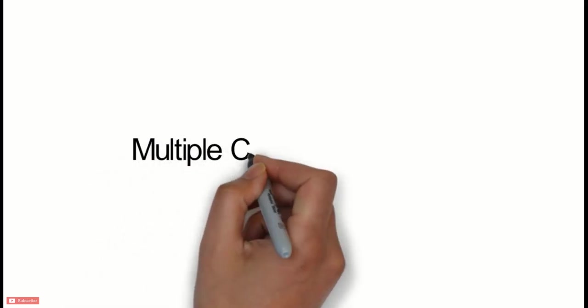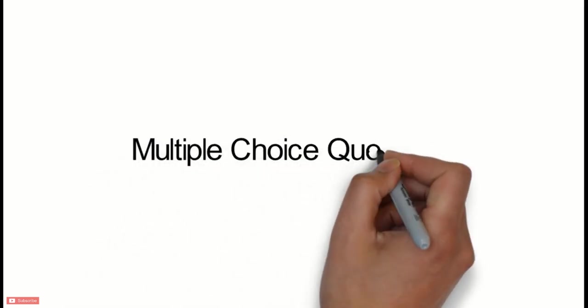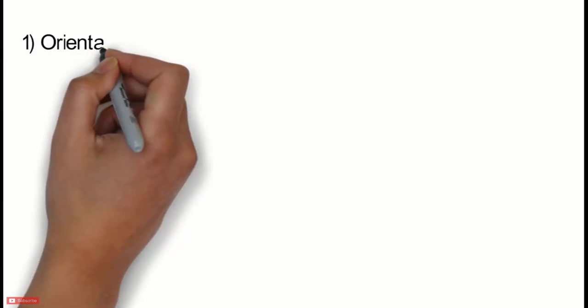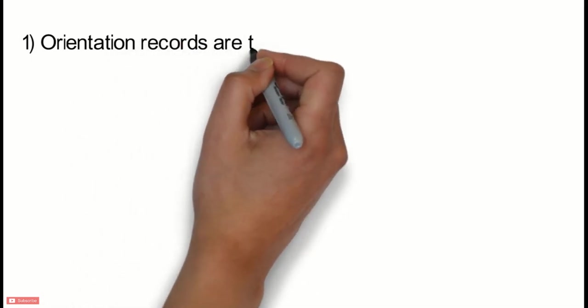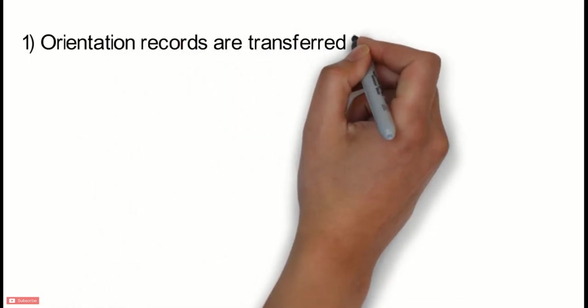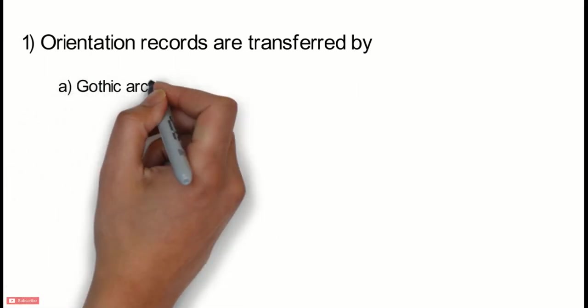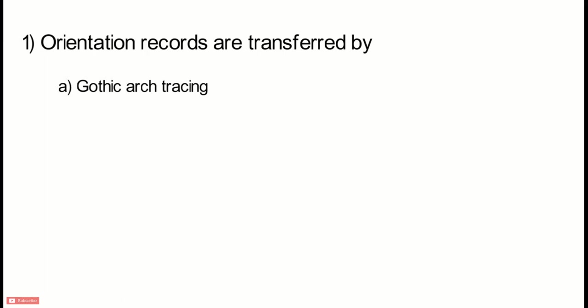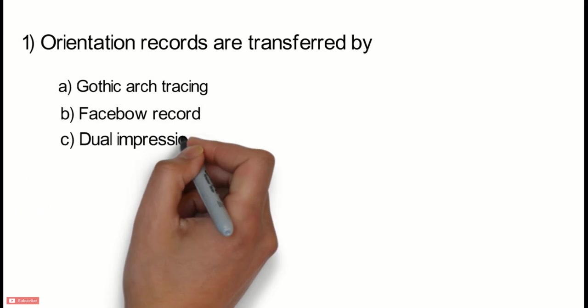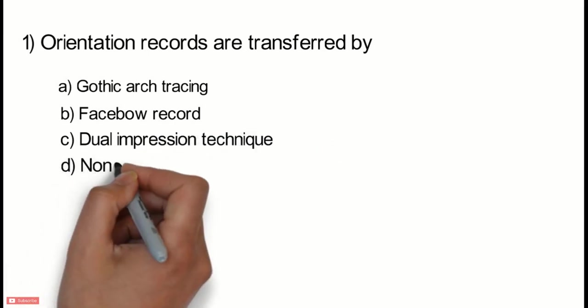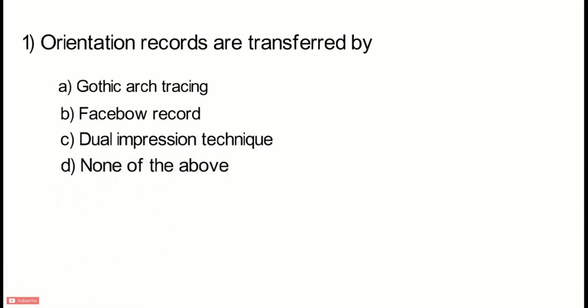Now let's revise what we have learnt about jaw relation record by solving some multiple choice questions. Question 1: Orientation records are transferred by — Option A: Gothic arch tracing; Option B: Face bow record; Option C: Dual impression technique; Option D: None of the above.